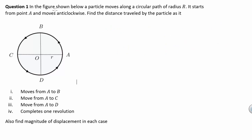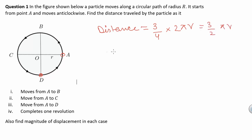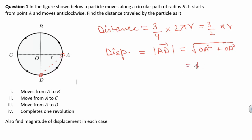In part 3 of the question, we have to find the distance and magnitude of displacement when the particle goes from point A to point D. The distance covered is equal to (3/4) × 2πr, which is equal to (3/2)πr. The displacement is equal to AD, which by Pythagoras theorem equals √(OA² + OD²), which is equal to √2·r.